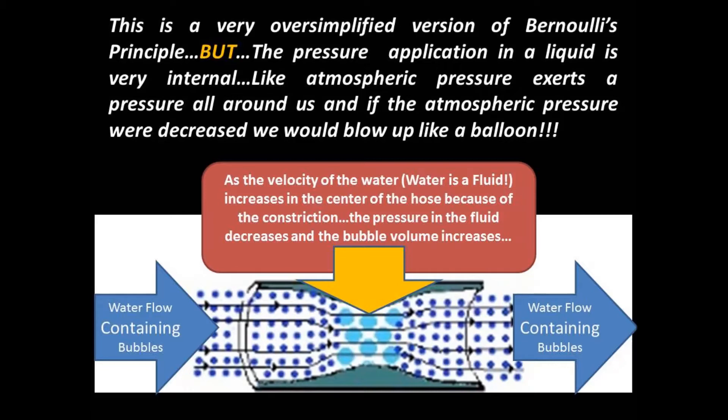This is a very oversimplified version of Bernoulli's principle, but the pressure in a liquid is very internal — like atmospheric pressure, which exerts pressure all around us. In a constricted pipe with increased fluid flow, the internal pressures are lower, so bubbles increase in volume. The fact that small bubbles become larger is proof that Bernoulli's principle is quite true.